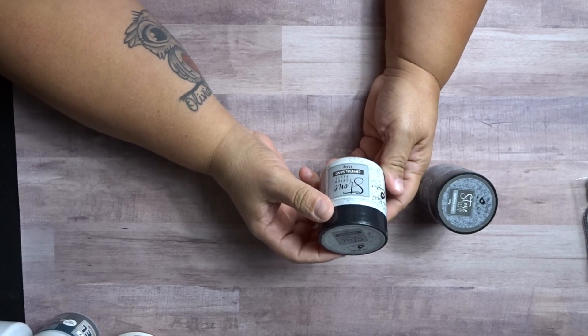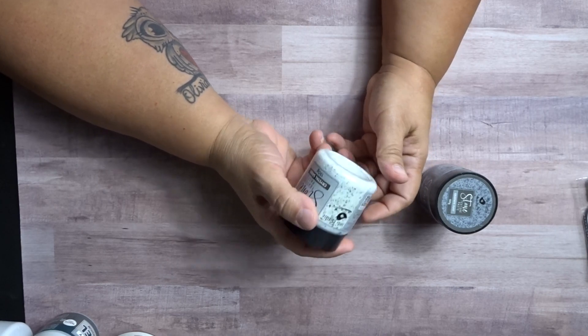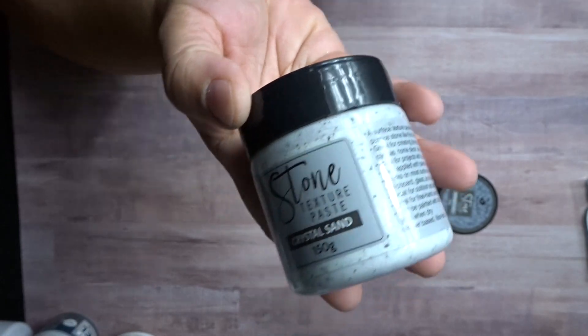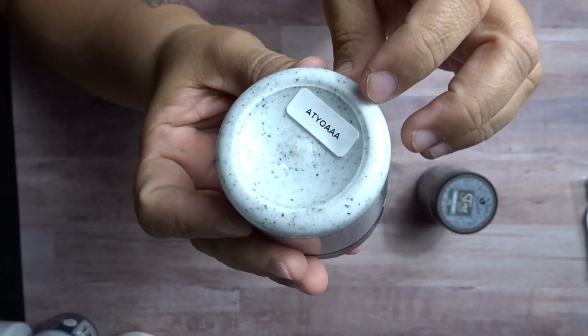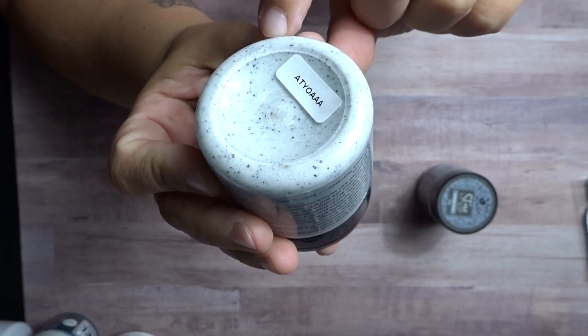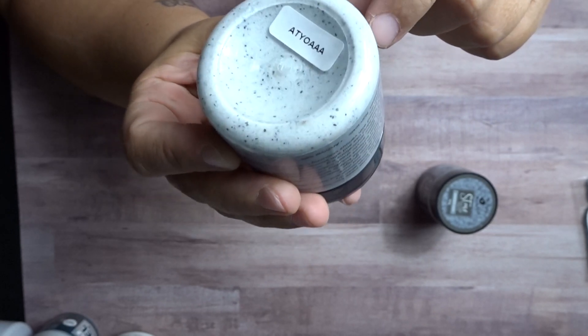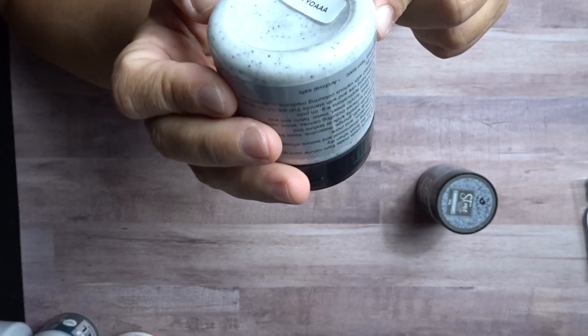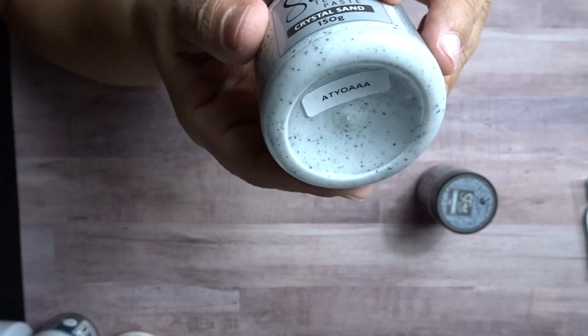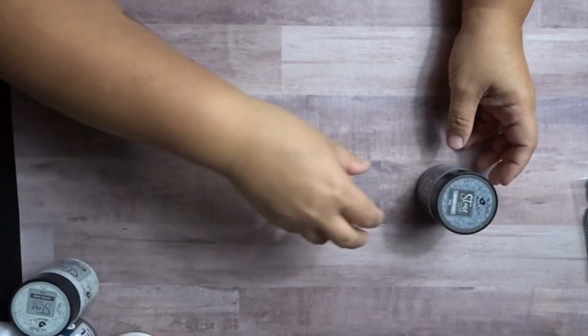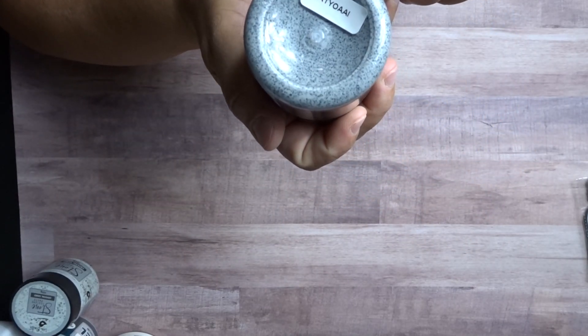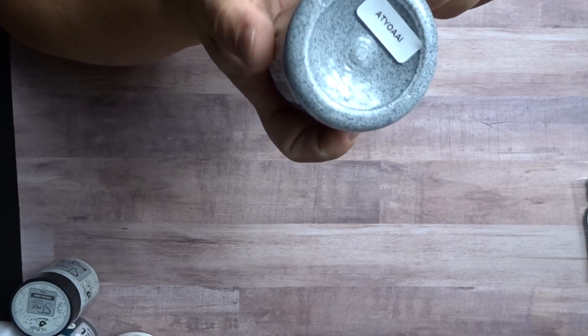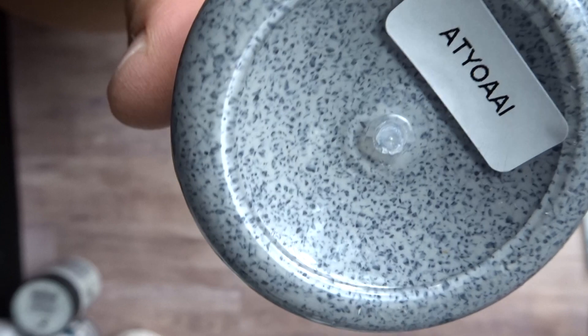So then I also got the crystal sand texture paste in stone. Let me show you that. It's like a white sandy stone. It has little pieces of black and white inside of it. It really does look like if it was stone. It's hard to pick that up on the camera. And then, this one here is graphite dust. And it has, it's like gray with black specks inside of it. So it's kind of hard to tell.